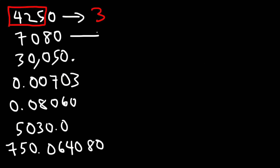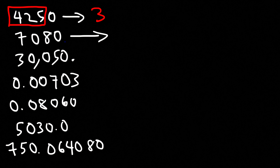For 7080, we do not have a decimal point, so we cannot count the trailing zero. However, the zero in between the non-zero numbers is always counted. So this number also has three significant figures.